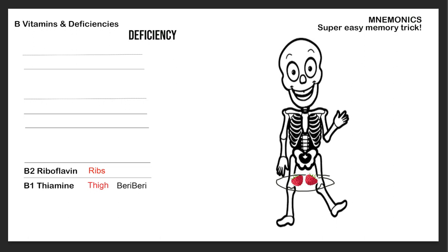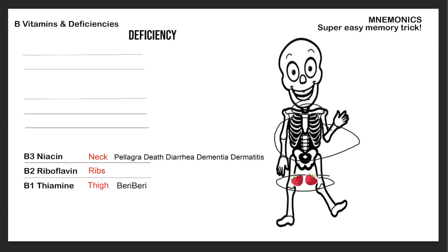B3 is niacin, which reminds me of 'neck' — you could say 'neckacin.' So you have thigh, ribs, and neck — one, two, three — going low to high: thiamine, riboflavin, and niacin. The deficiency for niacin is pellagra, with the four D's: death, diarrhea, dementia, and dermatitis. Pellagra reminds me of Pellegrino, like a drink going down the neck — a bit of a stretch, but it works.